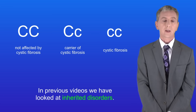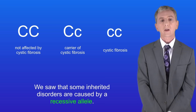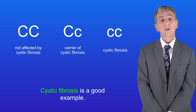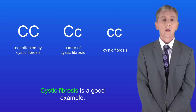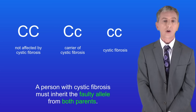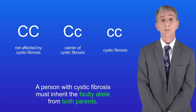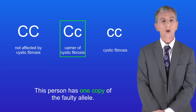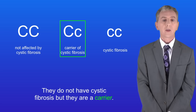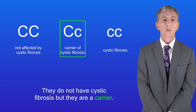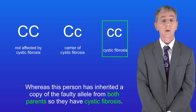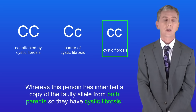In previous videos we've looked at inherited disorders and we saw that some inherited disorders are caused by a recessive allele, and cystic fibrosis is a good example. Remember that a person with cystic fibrosis must inherit the faulty allele from both parents. This person has one copy of the faulty allele so they do not have cystic fibrosis but they are a carrier, whereas this person has inherited a copy of the faulty allele from both parents so they've got cystic fibrosis.